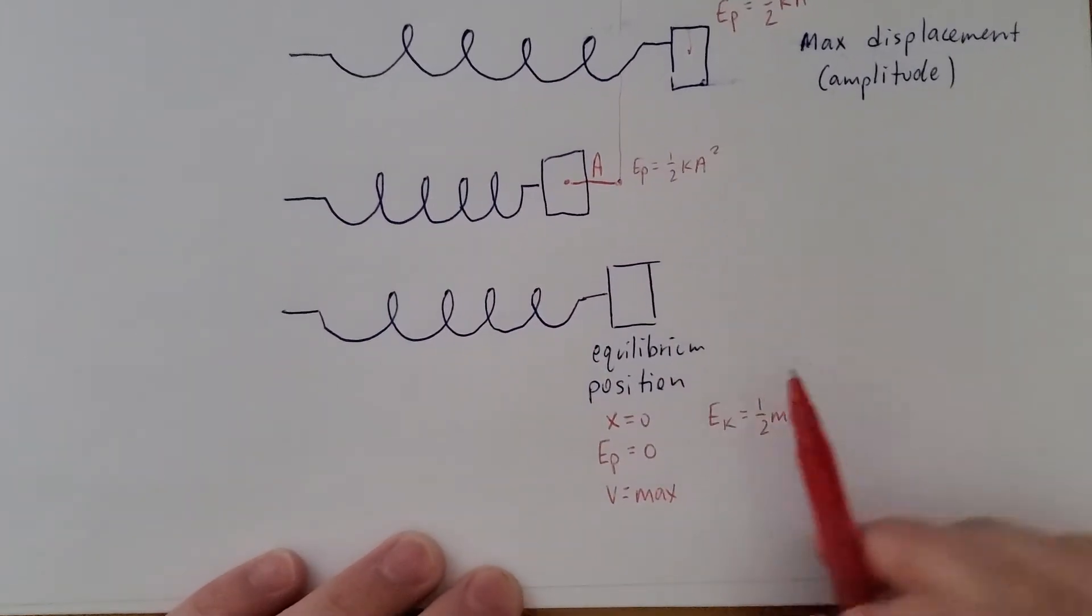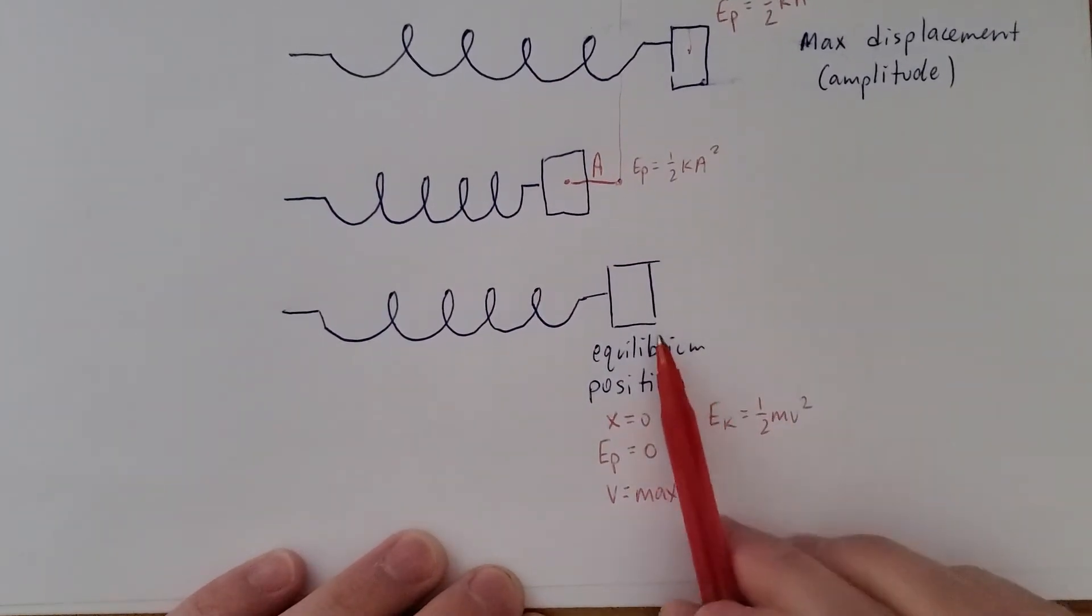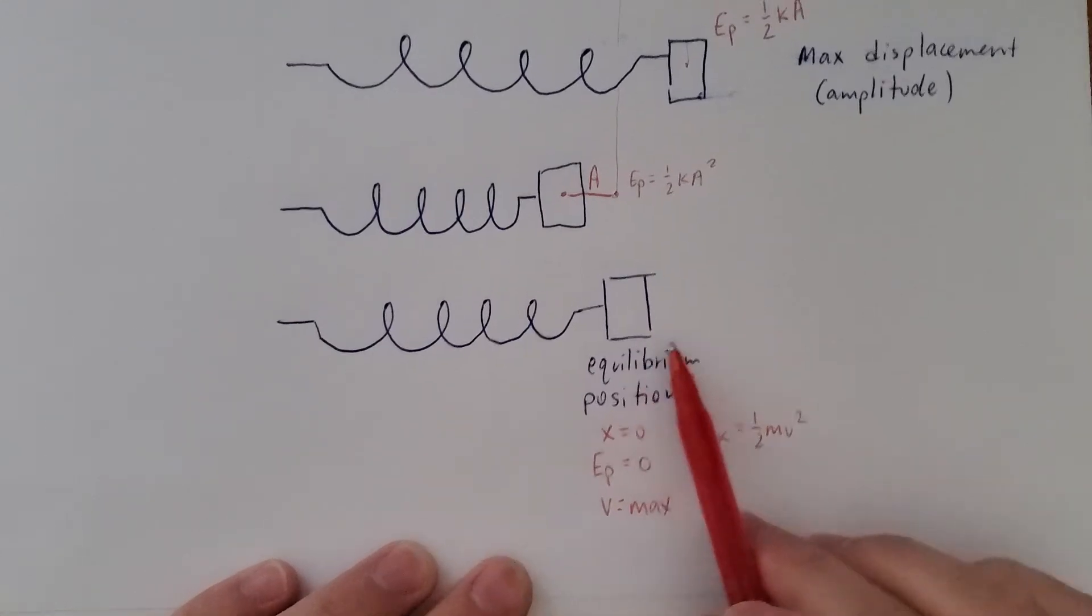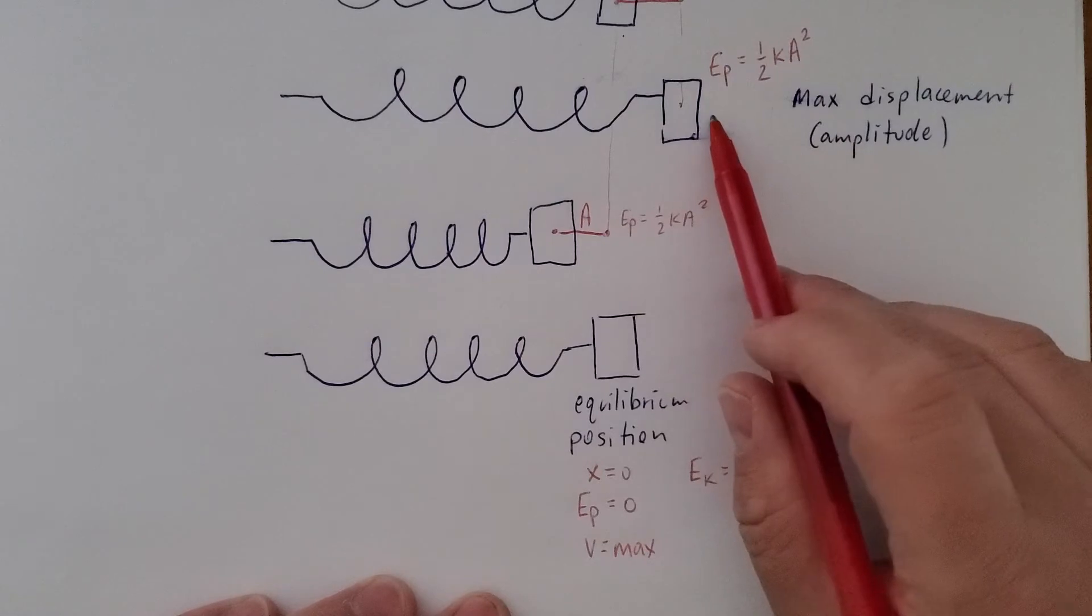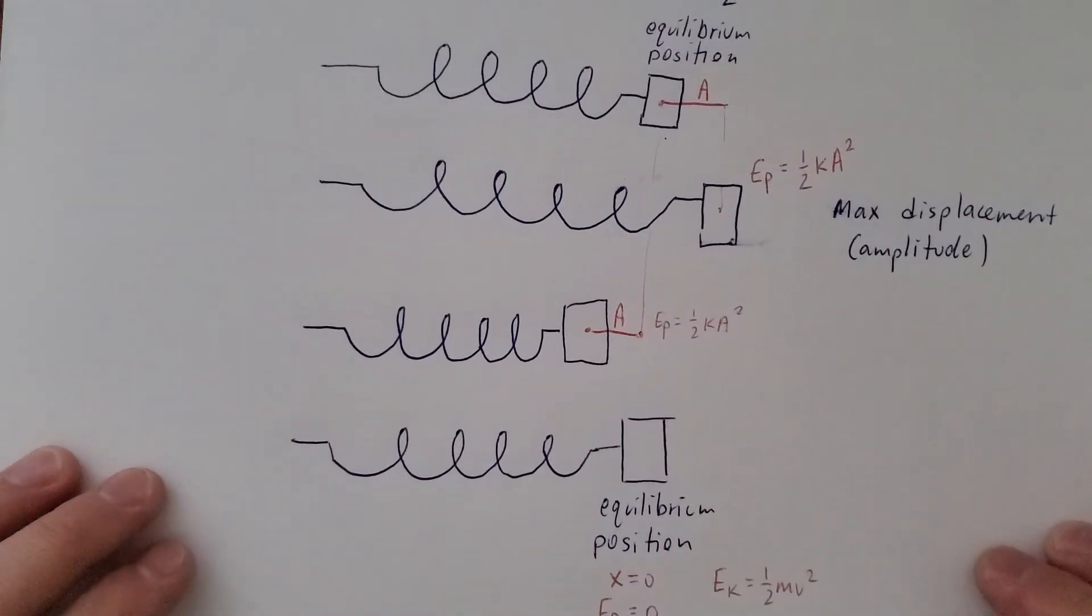What we're going to be able to say is that the kinetic energy at the equilibrium position is equal to the potential energy at the amplitude. Let's see what happens when we make that assumption.